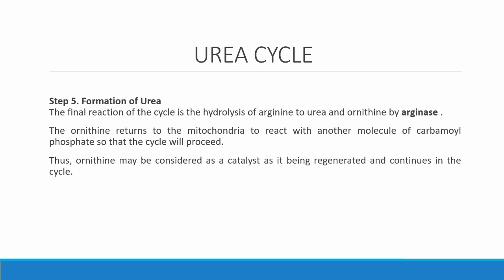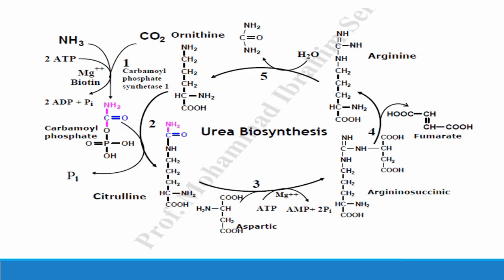The arginine that was formed is then converted to urea and ornithine by the enzyme arginase. The urea formed is transported to the kidneys and excreted from the body. Ornithine then continues in the reaction, reacting again with carbamoyl phosphate to form citrulline, and the urea cycle continues.